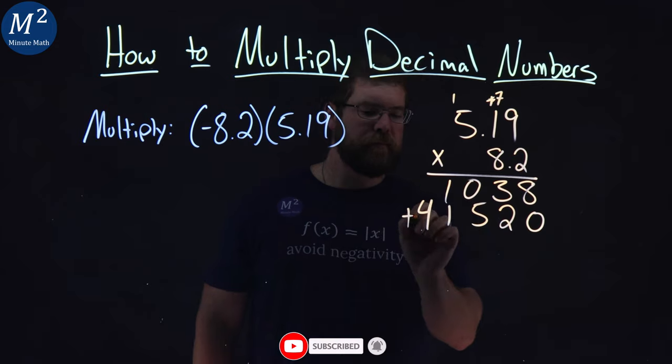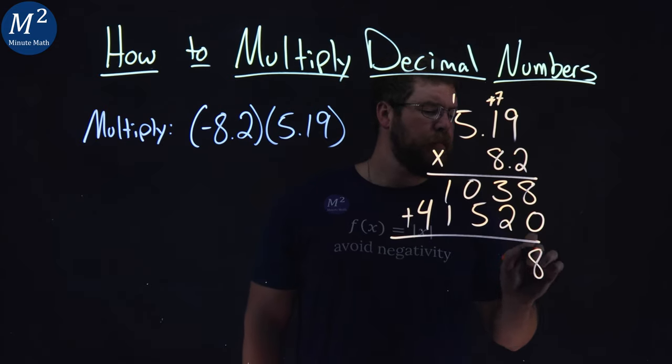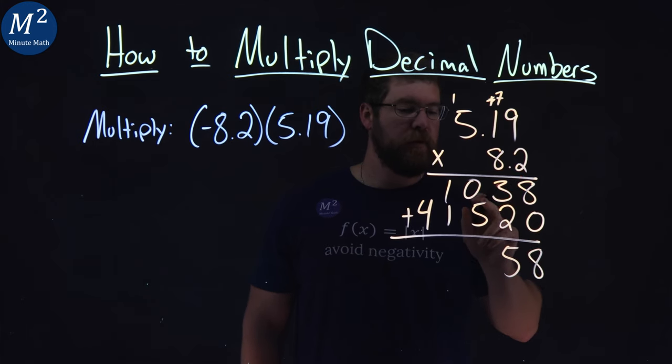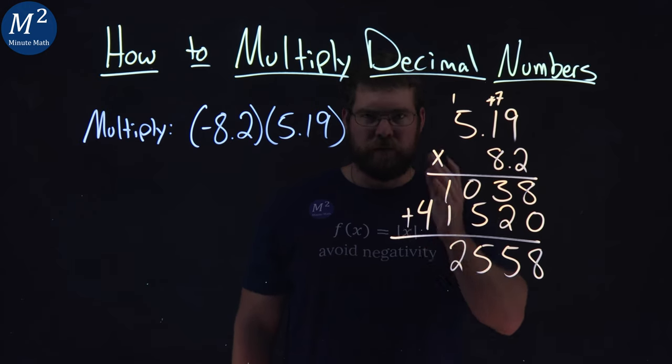Make sure everything's lined up. We add this. 8 plus 0, 8. 3 plus 2 is 5. 0 plus 5 is 5. 1 plus 1 is 2. And 4, well, by itself is 4.